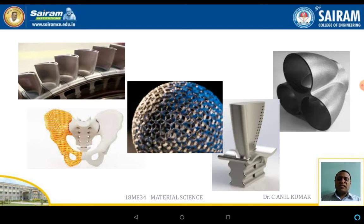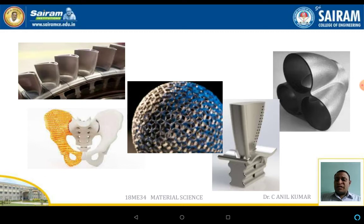The metallic or non-metallic materials are not made by a single material. For example, the blades - normally titanium blades - are not made with only titanium material; some other materials are also present. Even if you take an example of the hip joint, which is made up of polymer material, that polymer material is also not a single polymer. It is normally a composite material.